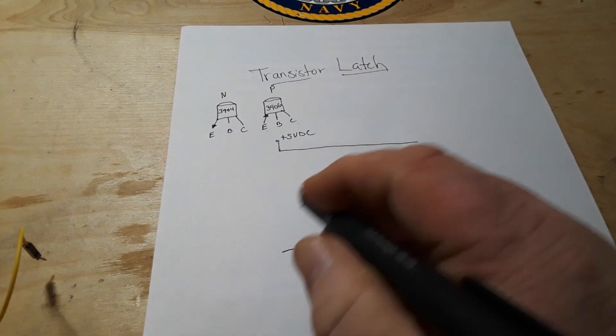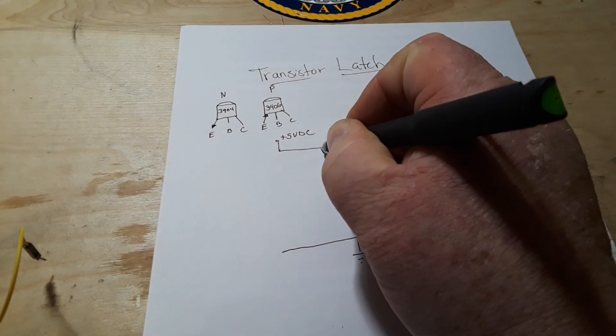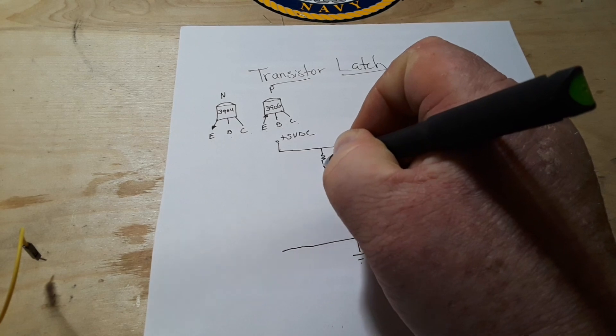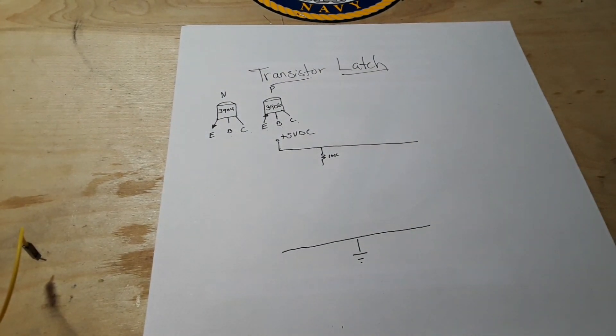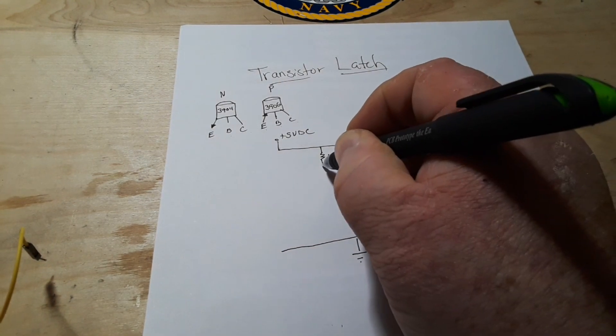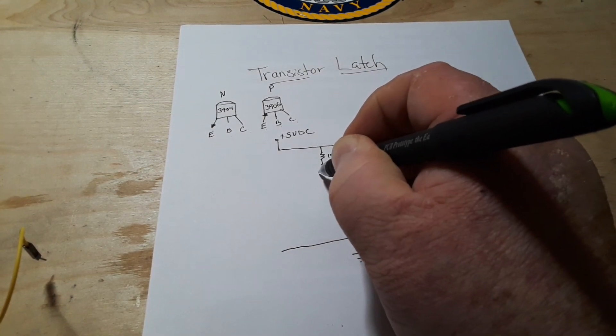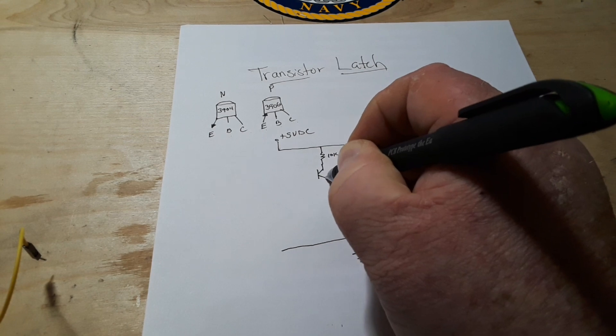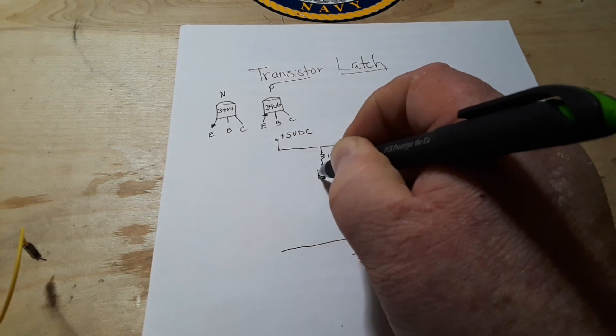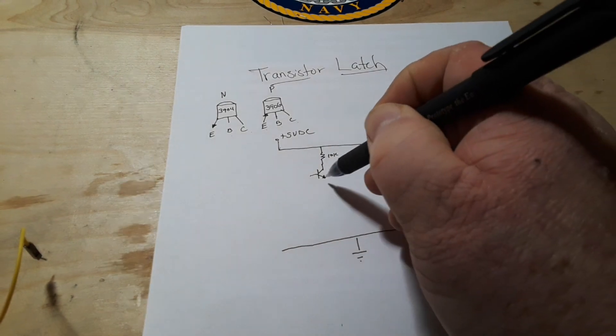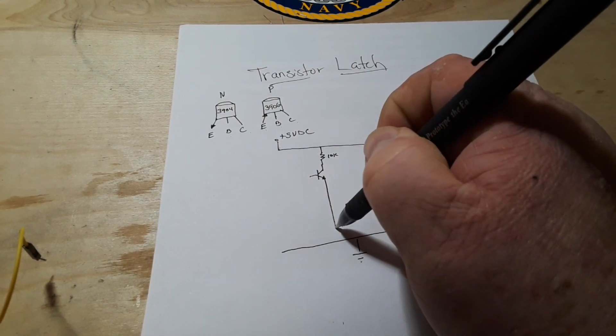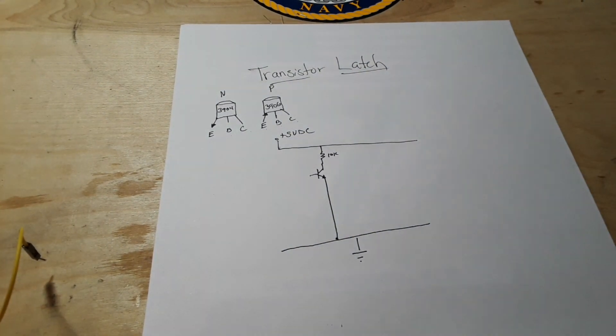Okay we're going to put a 10k current limiting resistor coming from VCC to the collector of our NPN transistor and the emitter will go directly to ground.